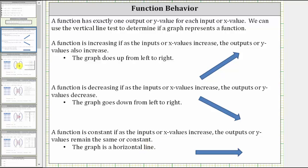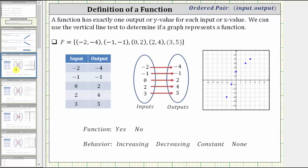Let's go back and take a look at our examples. The first set is set F, consisting of five ordered pairs. Notice how set F is given as five ordered pairs listed horizontally. Often we're given sets of ordered pairs in a table or vertically, which is equivalent. The ordered pairs are: negative two comma negative four, negative one comma negative one, zero comma two, two comma four, and three comma five. In the table, the first column has the inputs and the second column has the outputs.